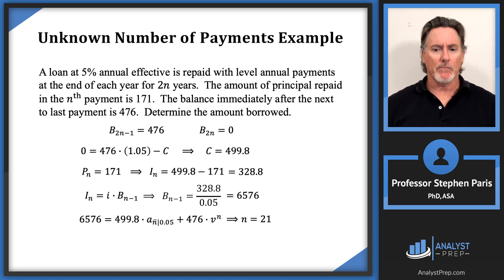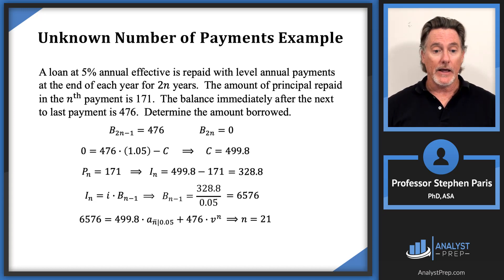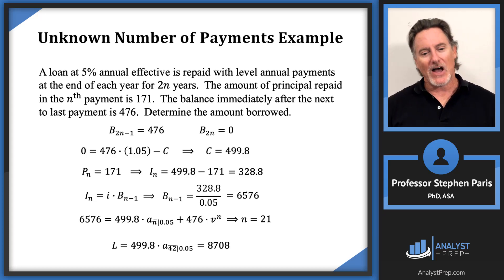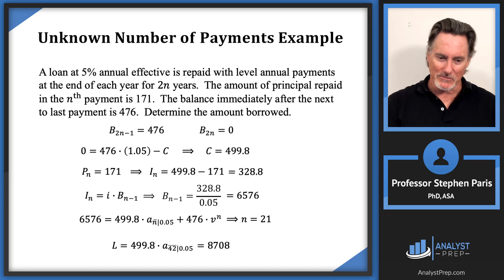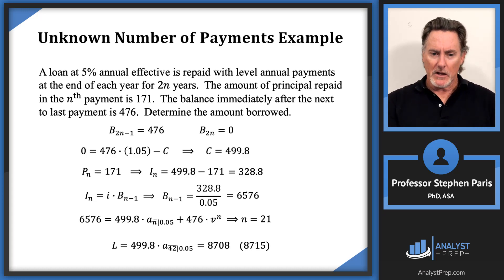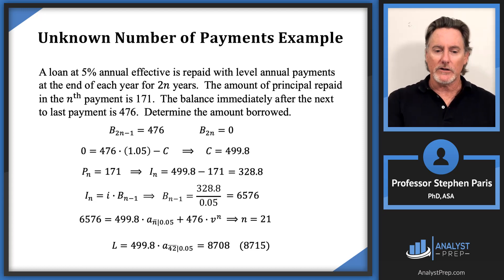With n = 21, there are 42 total payments of 499.8 each. So the amount borrowed L = 499.8 × a-angle-42 at 5% = 8708. This differs slightly from the first approach's answer of 8715 — a $7 difference — but that's purely round-off error and won't affect which answer choice you select on an exam.